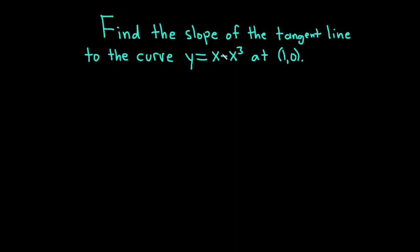Hello, in this video we're going to find the slope of the tangent line to the curve y equals x minus x cubed at the point (1, 0). Let's go ahead and carefully work through this solution.